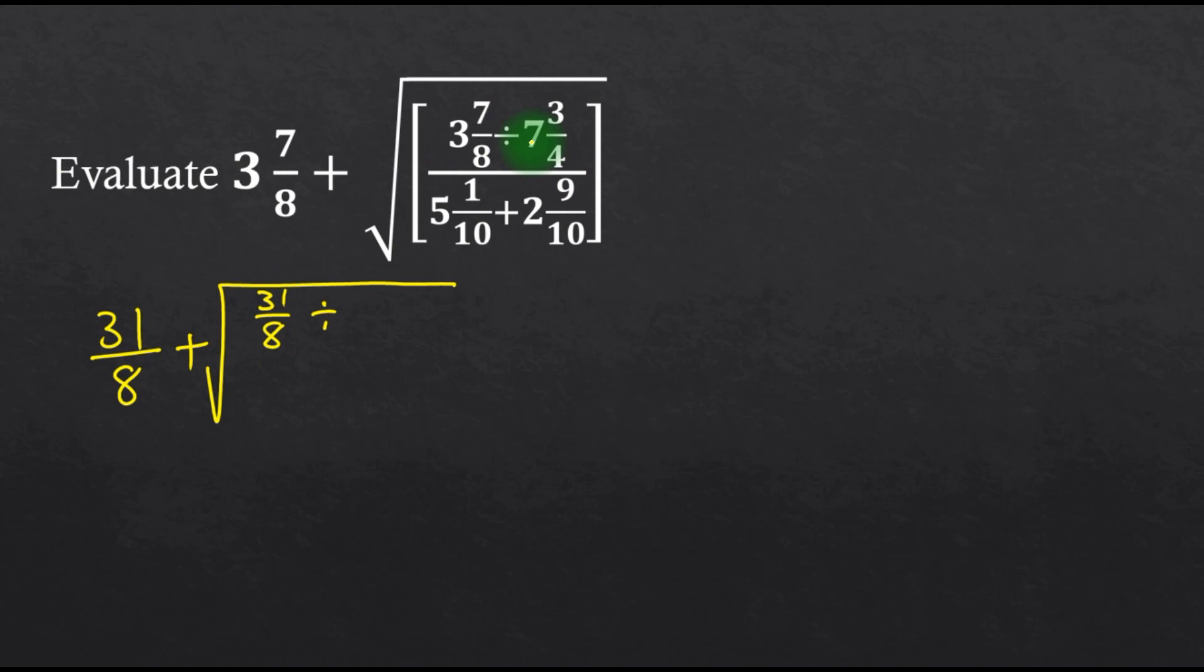4 times 7 is 28, 28 plus 3, that is 31 over 4, all over...